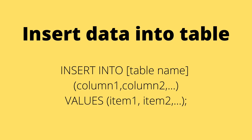Now, to insert data into the table, follow this syntax: 'INSERT INTO table_name (column1, column2) VALUES (item1, item2)'. The column names and values must correspond — item1 goes into column1, item2 into column2. For example, if column1 is 'name' and column2 is 'email', you'd put 'John' and 'john@gmail.com' as the respective values. The order doesn't need to be strictly sequential as long as columns and values correspond.